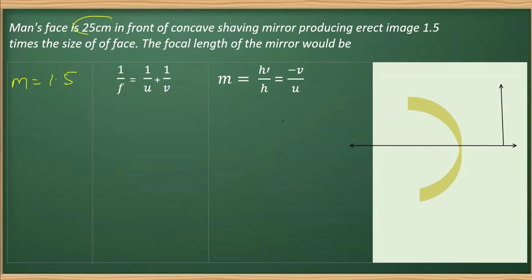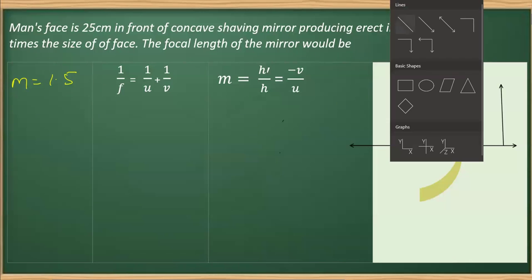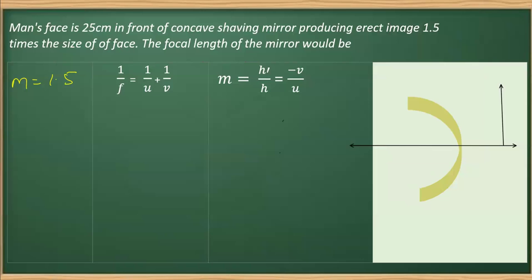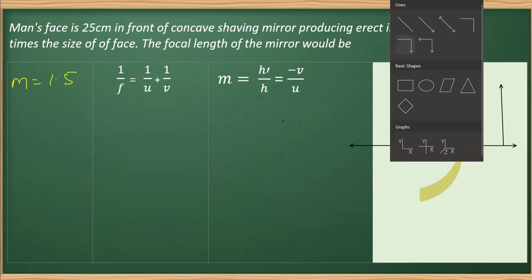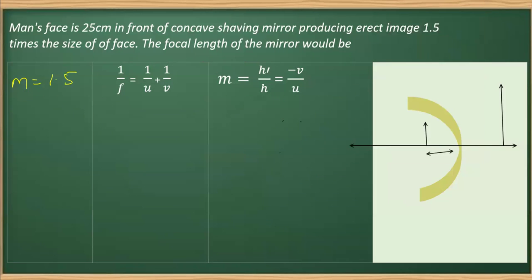And we have the object distance U which is placed at 25 centimeters in front of the concave mirror. We do not know the focal length as of now, but we know the object distance, this U. This is given to us as 25 centimeters.